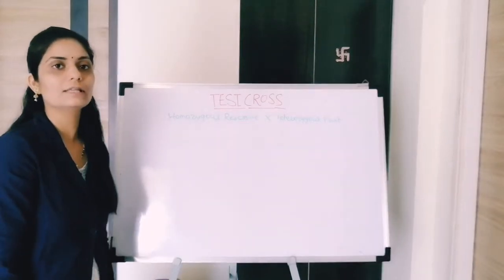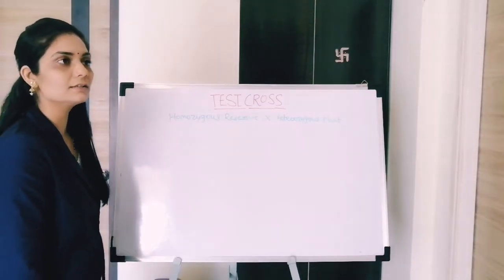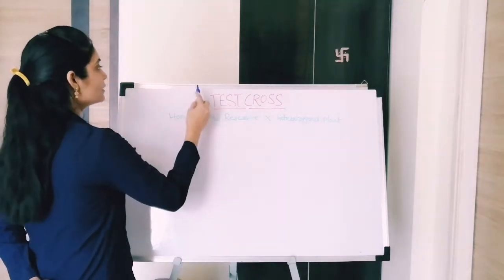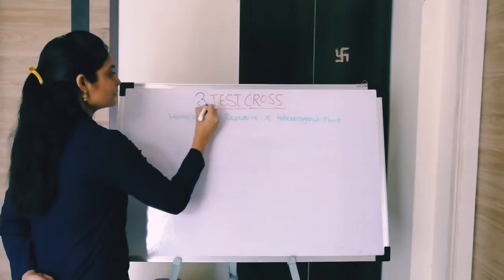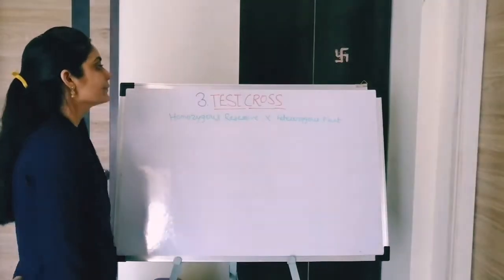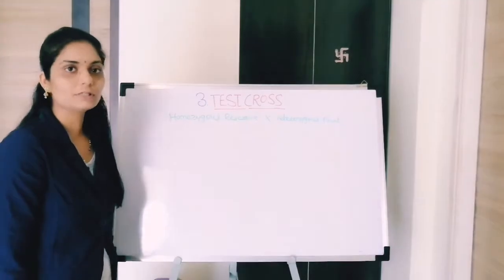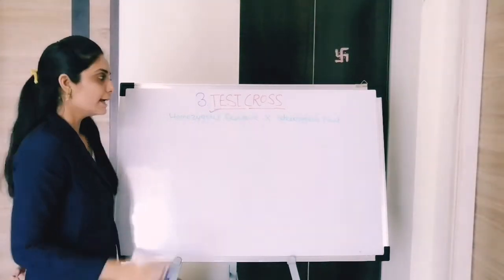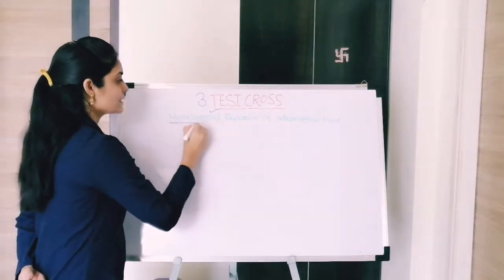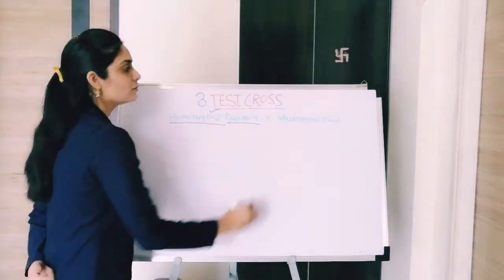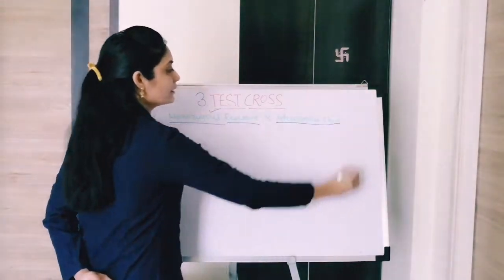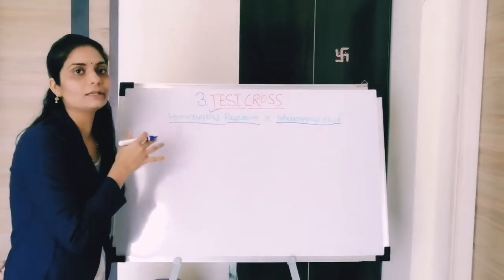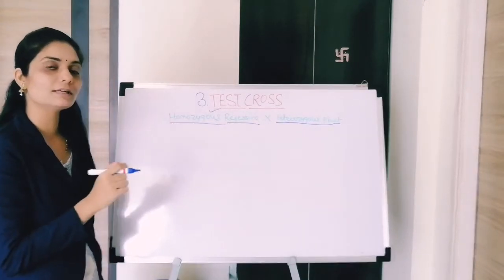In previous videos we studied the back cross and before that the monohybrid cross. Now this is the third cross we are studying, which is called the test cross. Mendel did several crosses, and one of them is the test cross. In the test cross, he crosses the homozygous recessive character with the heterozygous plant — heterozygous meaning one dominant character and one recessive character.